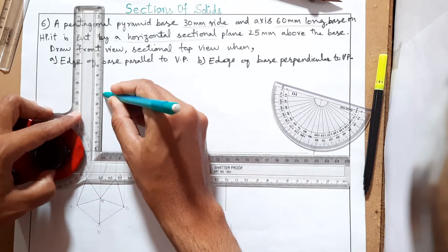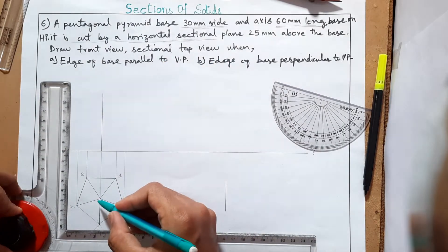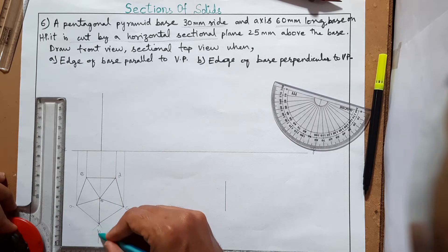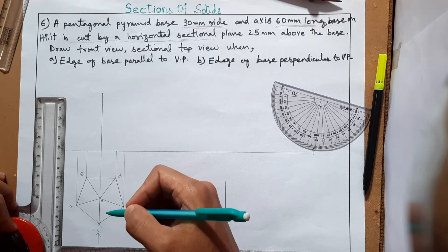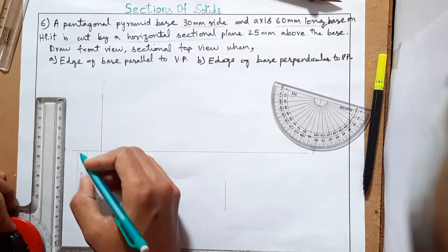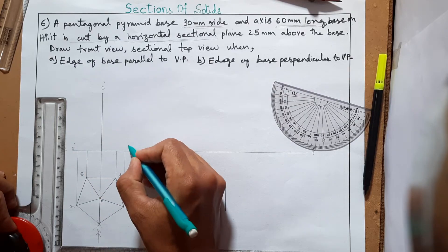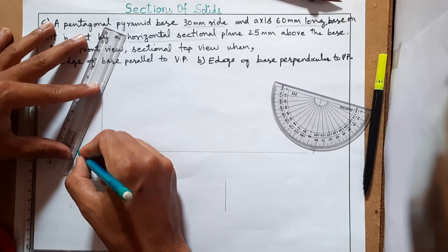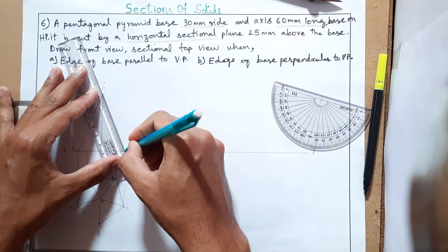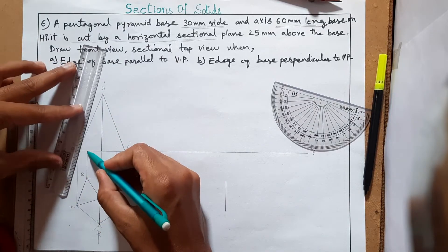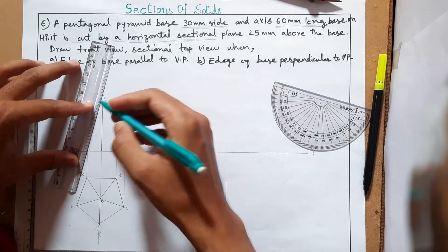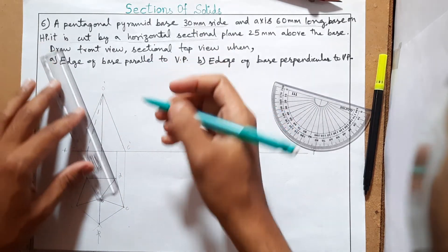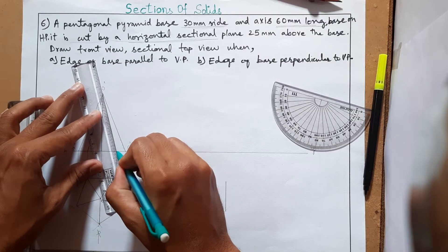From the apex, draw a dark continuous slant edge — axis is not drawn because slant edge OB is visible in this direction. So here we have O-dash, A-dash, and C-dash. The front view shape is triangular. Edge E will be behind, so draw it as a thick dashed line; D is also a thick dashed line at the back.